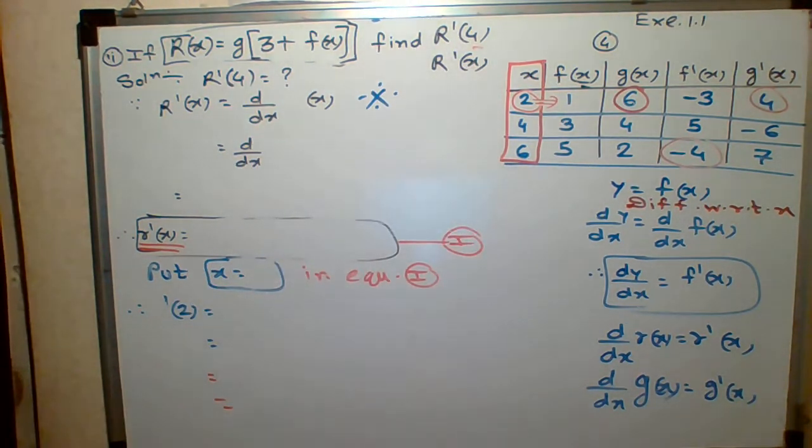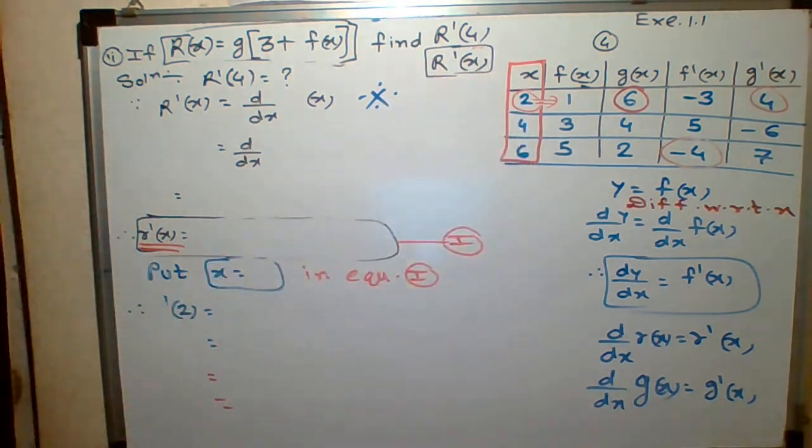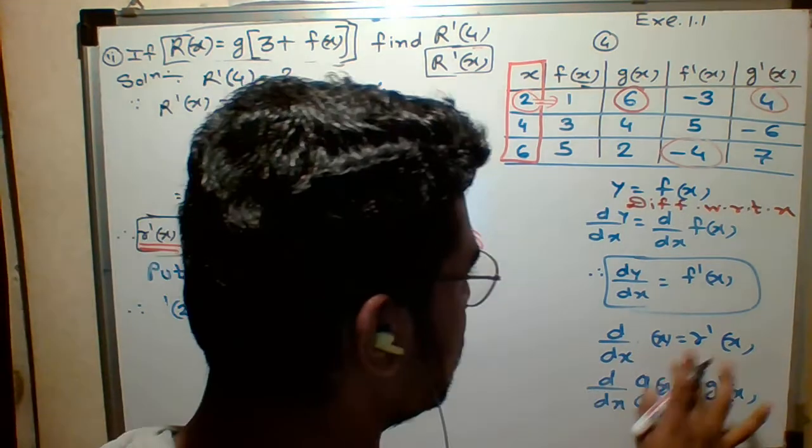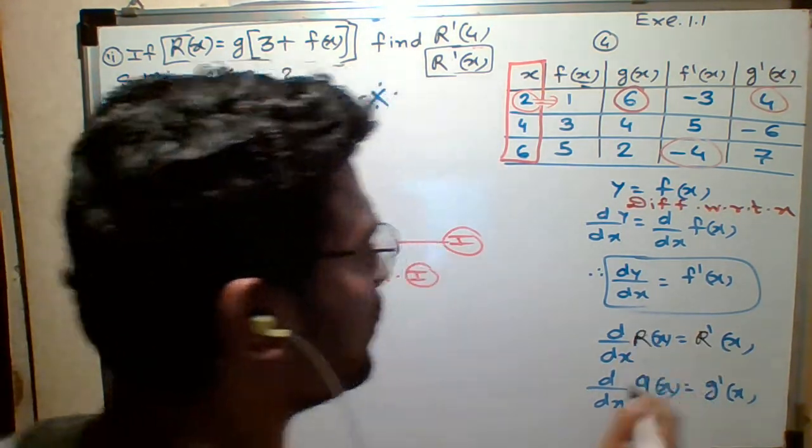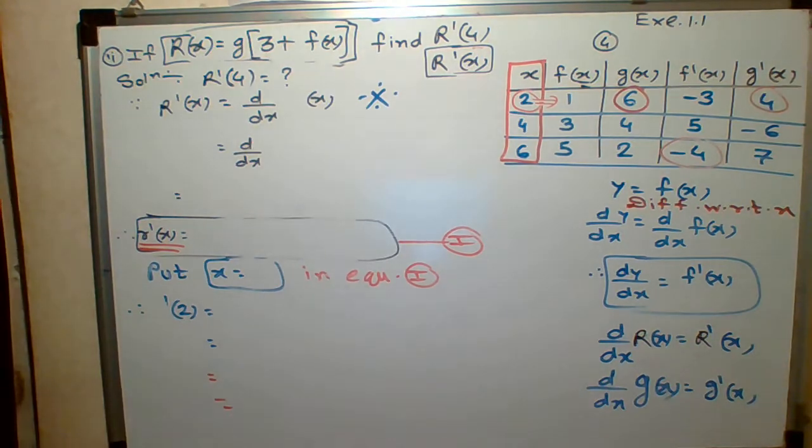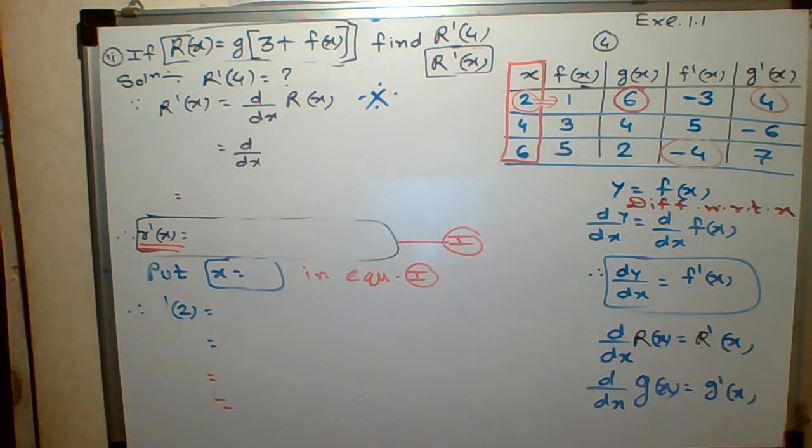Just forget that 4. Only consider R dash of X. So what do you mean by R dash of X? Capital R dash of X is the derivative of that without dash. Capital R dash of X means derivative of R of X. That much you understood. This is your first basic.